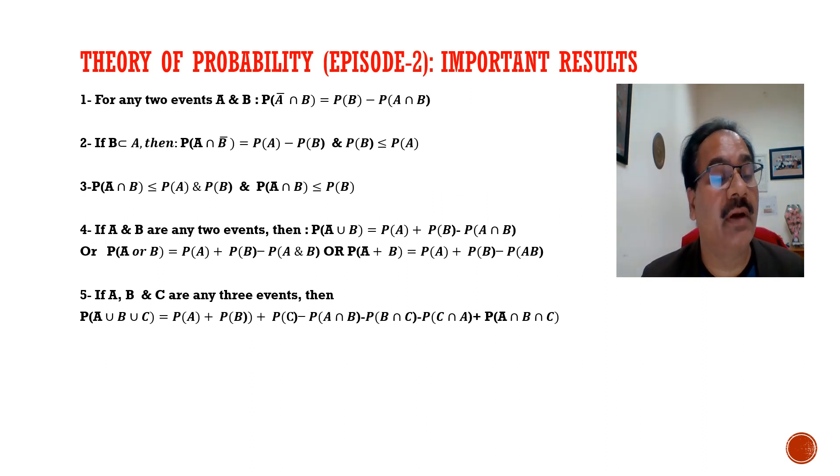The first result is for any two events A and B, P of A bar intersection B is equal to P of B minus P of A intersection B. The second important result is if B is contained in A, then P of A intersection B bar is equal to P of A minus P of B, and P of B is less than or equal to P of A.